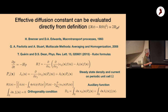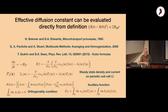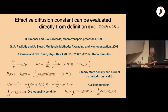There are also averaging and homogenization methods from applied mathematics and applied probability, and you can also use a statistical mechanics approach to get Kubo-type formulas for the effective diffusion constant. So there are three different approaches. In this approach I've changed the sign of the Fokker-Planck operator to make it a positive operator.